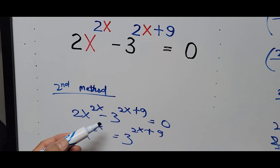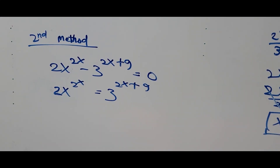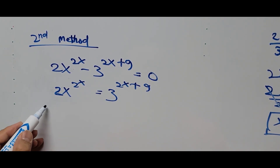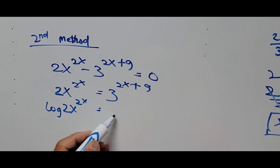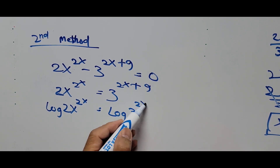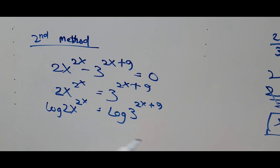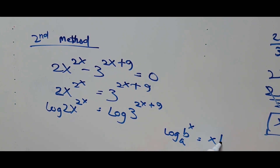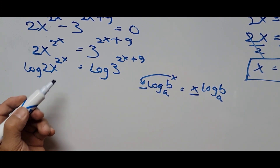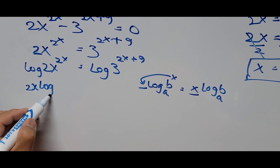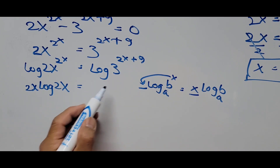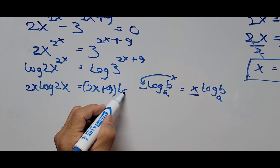Now let's use the second method. I've written the equation and transposed the middle term to the right side of the equation, and we'll use logarithms. Taking the log of both sides: log of 2x raised to the 2x equals log of 3 raised to the 2x plus 9. Using the logarithm rule — log of b raised to x equals x times log of b — the exponent moves to the front as a coefficient. This becomes 2x log of 2x equals the quantity 2x plus 9 times log of 3.